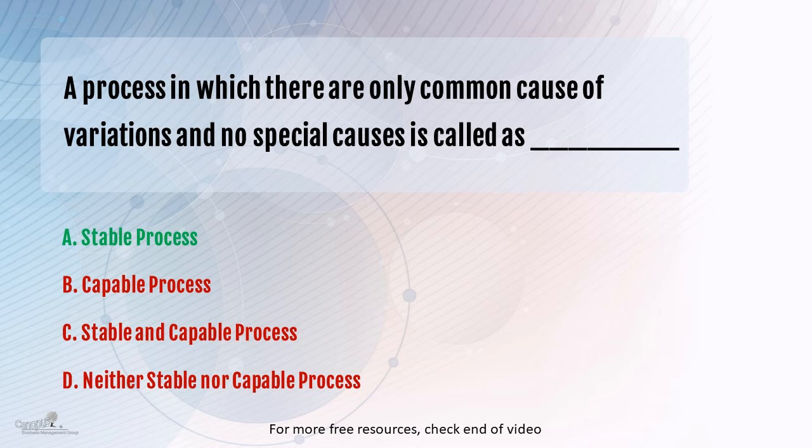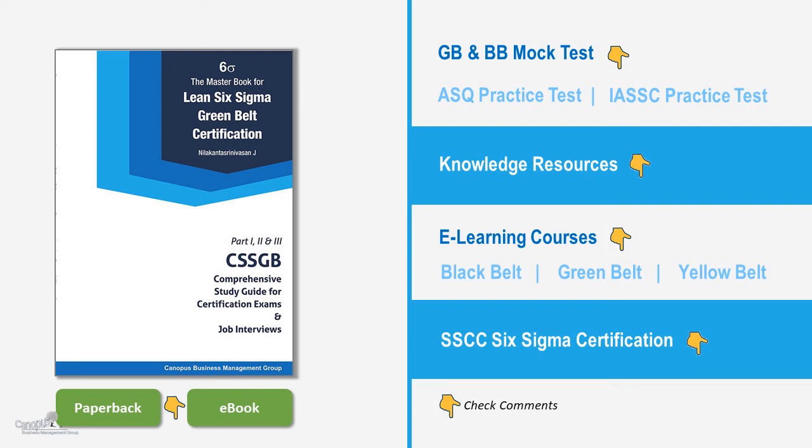A capable process is one in which we are comparing the process performance as against the expectations or requirements of the customer and we are performing a process capability study, which we have not touched upon in this question at all. We have not covered or talked anything about customer, so option B is in no way relevant here in this question.